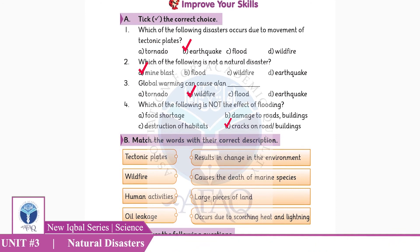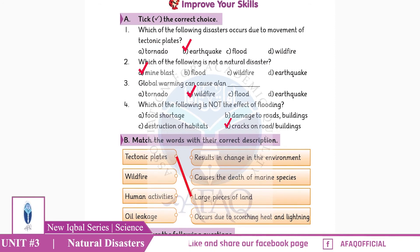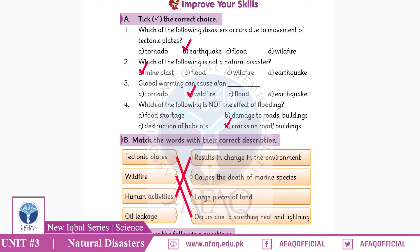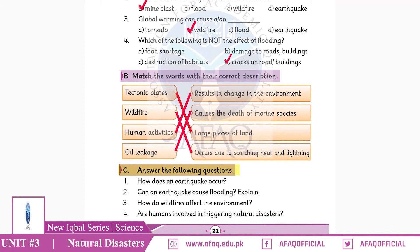Now match the words with the correct description. Tectonic plates: large pieces of land. Wildfire: occurs due to scorching heat and lightning. Human activities: results in change in the environment. Oil leakage: causes the death of marine species.